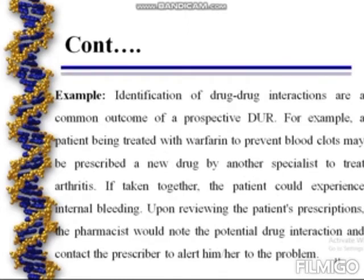For example, identification of drug-drug interactions is a common outcome of prospective drug utilization review. A patient being treated with morphine to prevent blood clots may be prescribed a new drug by another specialist to treat arthritis. If taken together, the patient could experience internal bleeding. Upon reviewing the patient's prescription, the pharmacist would note the potential drug interaction and contact the prescriber to alert them to the problem.